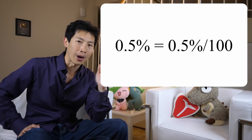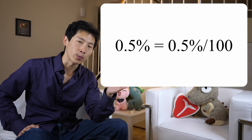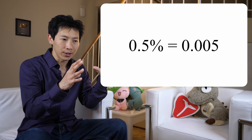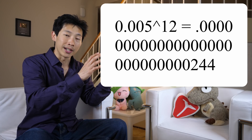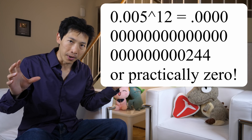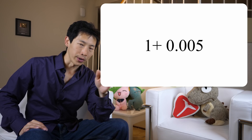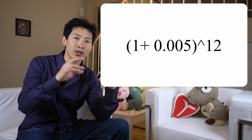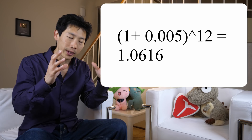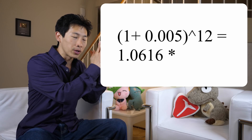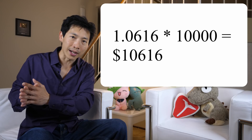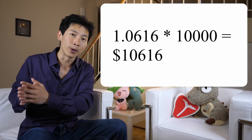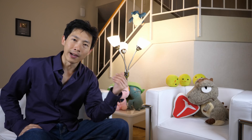This is where exponents come in. Half a percent is really 0.005. You can't just take that and raise it to the 12th power because it's going to get smaller and smaller. What you need to do is 1 plus 0.005, and then take that to the 12th power. When you do this, multiply that whole number by 10,000 and you'll get the end result — the total amount you're going to owe at the end, compounding it.